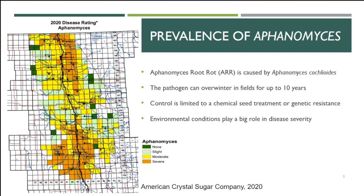The pathogen is pretty widespread across the Red River Valley area where we grow sugar beets. Part of why it's so prevalent is that it can overwinter in fields for at least 10 years, which means it's kind of always there, silently waiting for a good season. Control is really limited to chemical seed treatments and the use of genetic resistance. Resistant varieties exist, but none of them are completely immune. Environmental conditions play a big role in disease severity, so dollar amounts associated with losses can vary widely from season to season. If you don't prep for disease, naturally that'll be the year that pressure is really high.